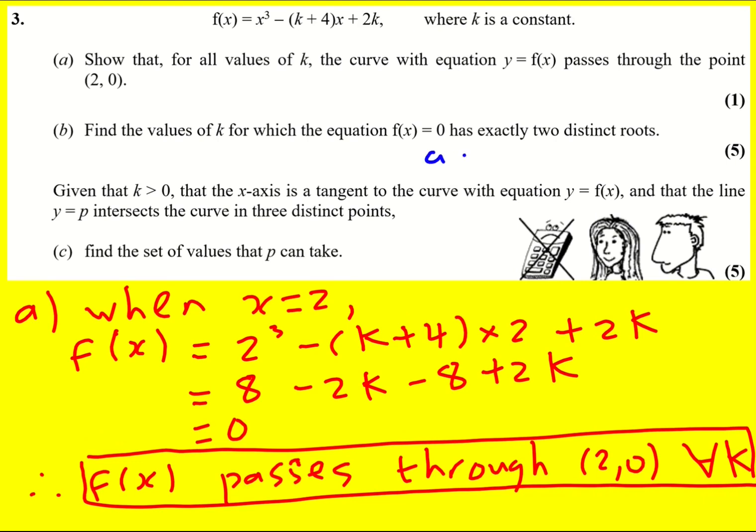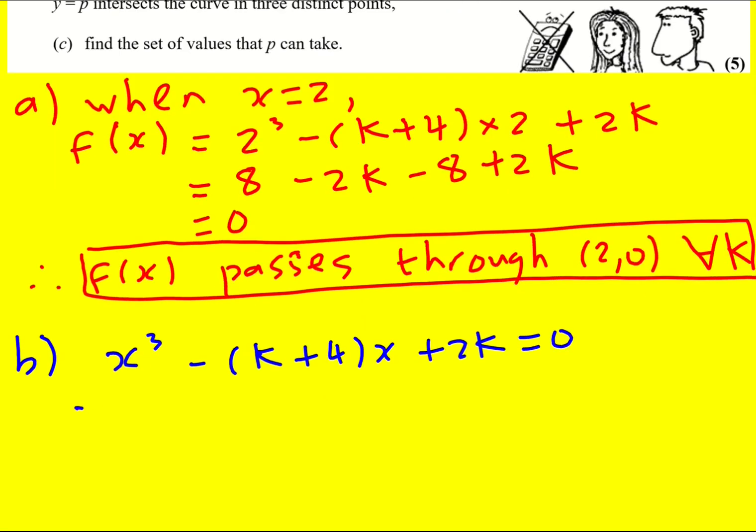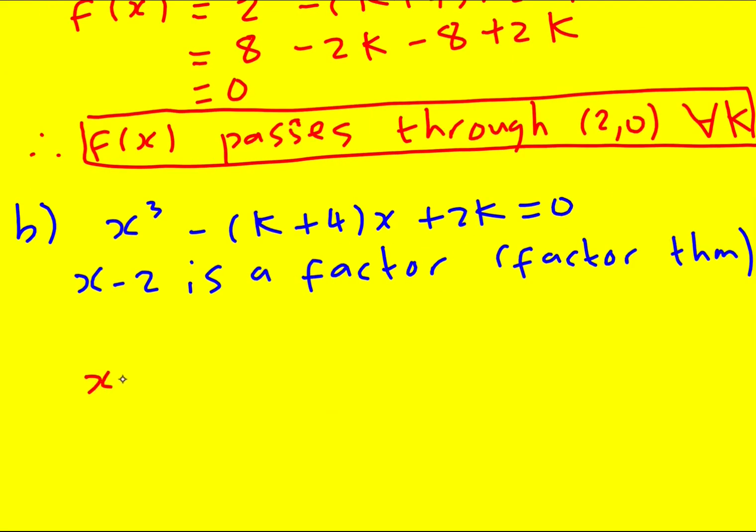Well, first of all, let's divide through by a factor that we know. So we have x³ - (k+4)x + 2k equals zero, and x-2 is a factor since when we substitute 2 in we get 0, which we showed in part (a). Technically this is the factor theorem. Therefore we can divide through by x-2.